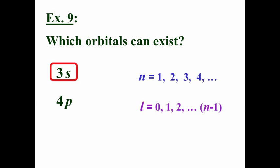How about four P? And again, you might answer this question based upon whether you've seen this before. But if we kind of work it out, if N equals four, then L could equal zero or one or two or three. And zero is an S subshell, one is a P subshell, therefore that's fine.